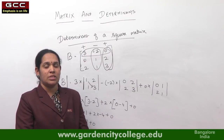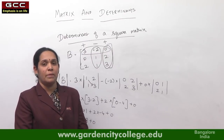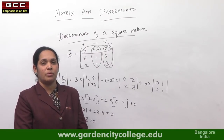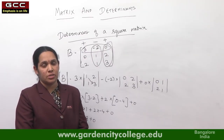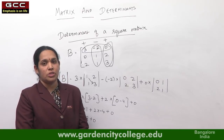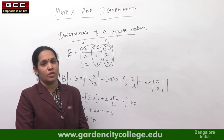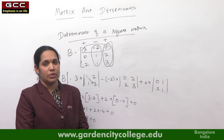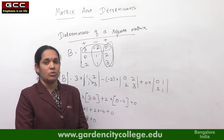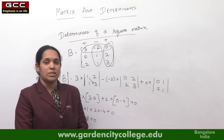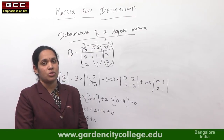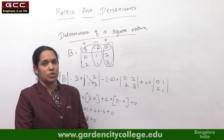In this session, we have discussed the basic definition of a matrix, types of matrices, operations on matrices, and how to find the determinant of a 2 by 2 and a 3 by 3 matrix. In the next session, we will discuss solving simultaneous equations using Cramer's rule and matrix multiplication method.